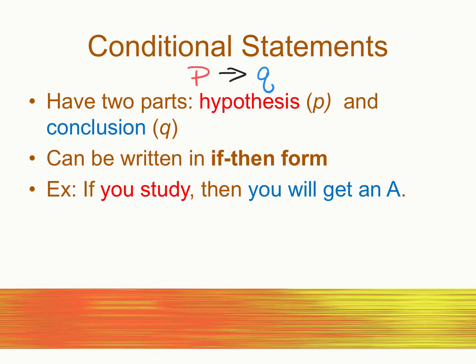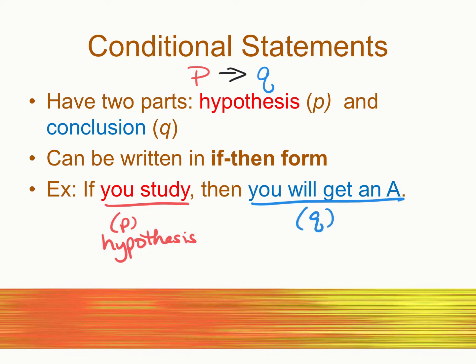This conditional statement may or may not be true. In this sentence, 'if you study' is the hypothesis — the P — and 'you will get an A' is the conclusion, indicated by Q. This statement may or may not be true. If you only studied a little bit, you might not get that A. If you studied a lot, potentially you would get the A. So this sentence could be true or false depending on how much you studied.